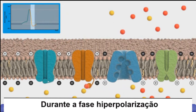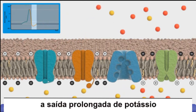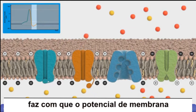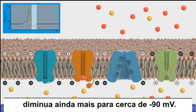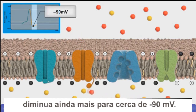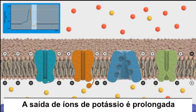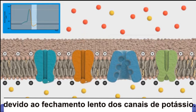During the after hyperpolarizing phase, prolonged outflow of potassium ions causes the potential difference across the membrane to decrease further, to about minus 90 millivolts. The outflow of potassium ions is prolonged due to the slow closure of potassium gates.